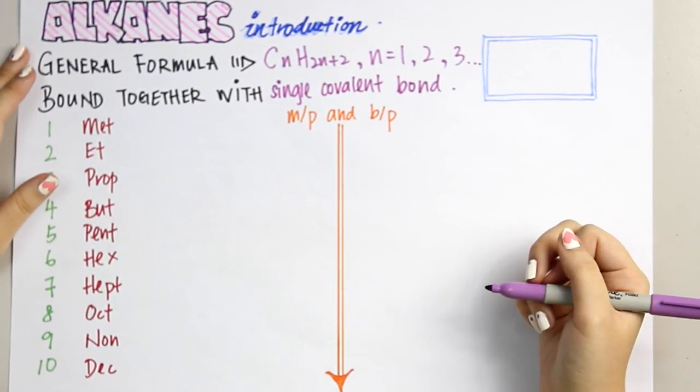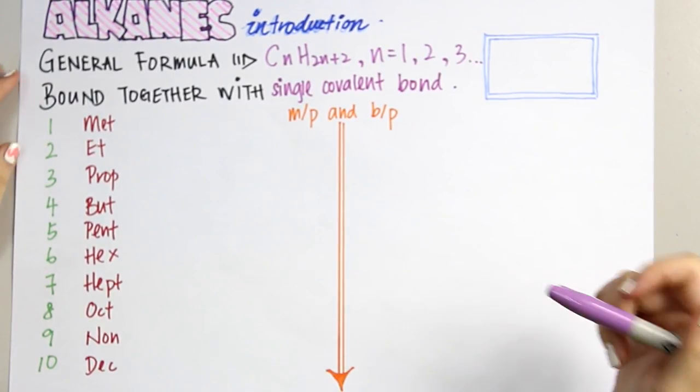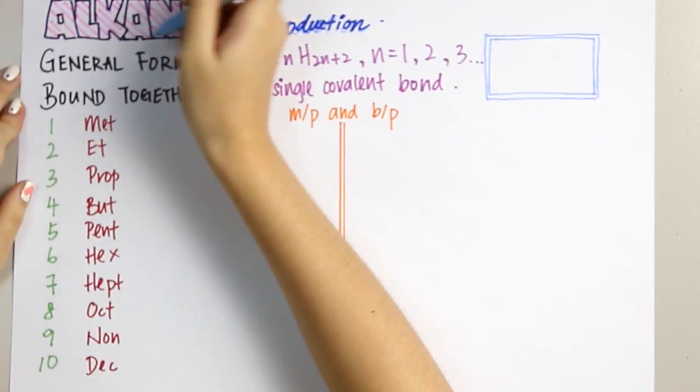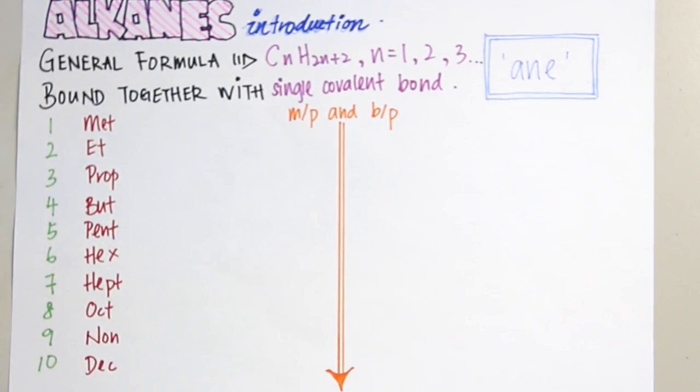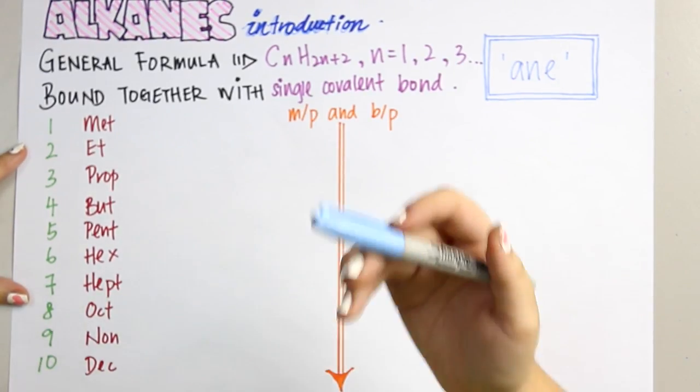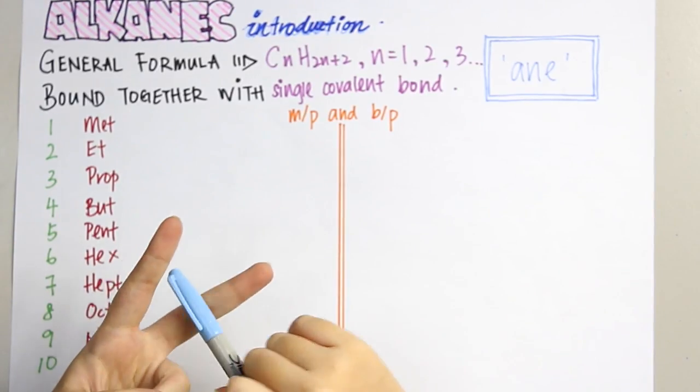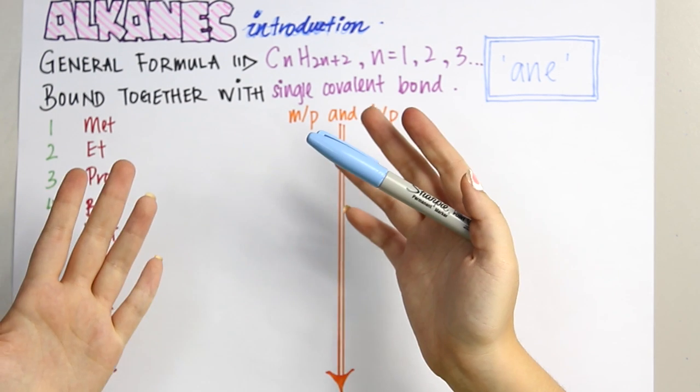Next, we have to know the suffix of alkanes is '-ane'. There are a lot of examples for alkanes such as methane, ethane, and pentane. But how are we going to remember all of them? Let's start with a formula with just one storyline.